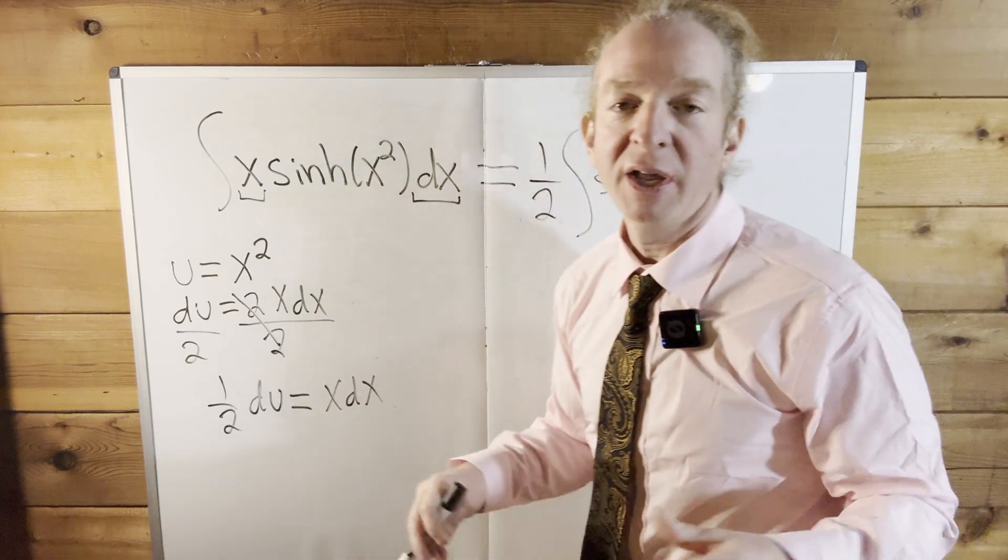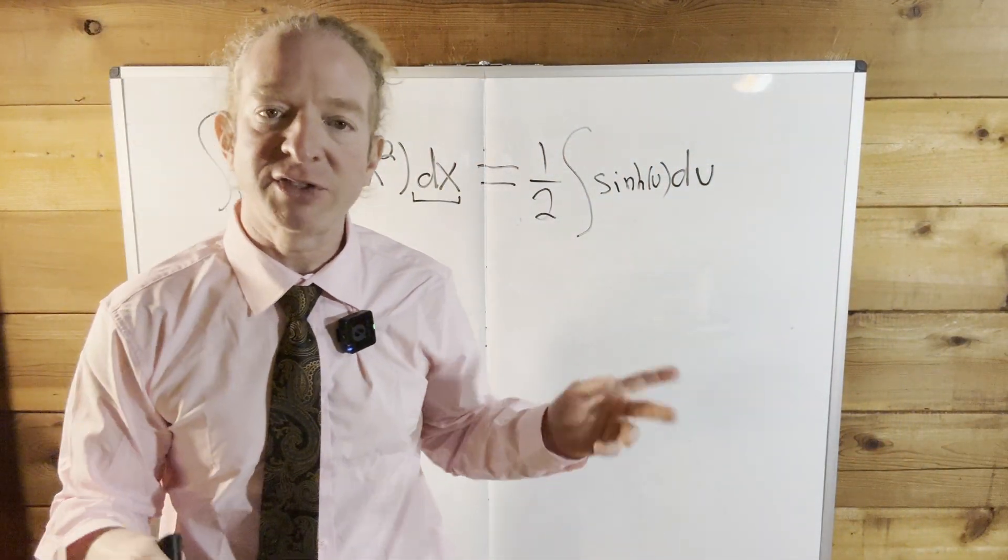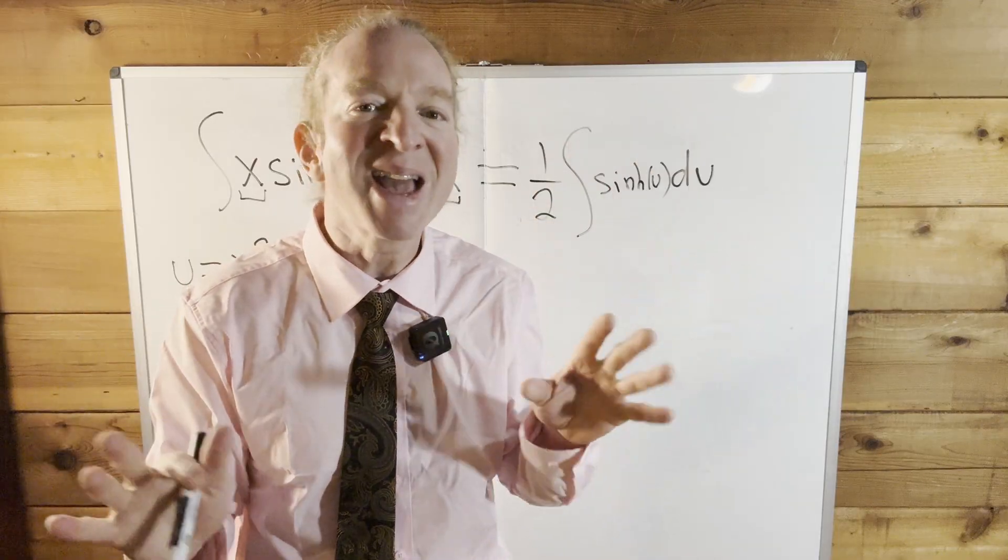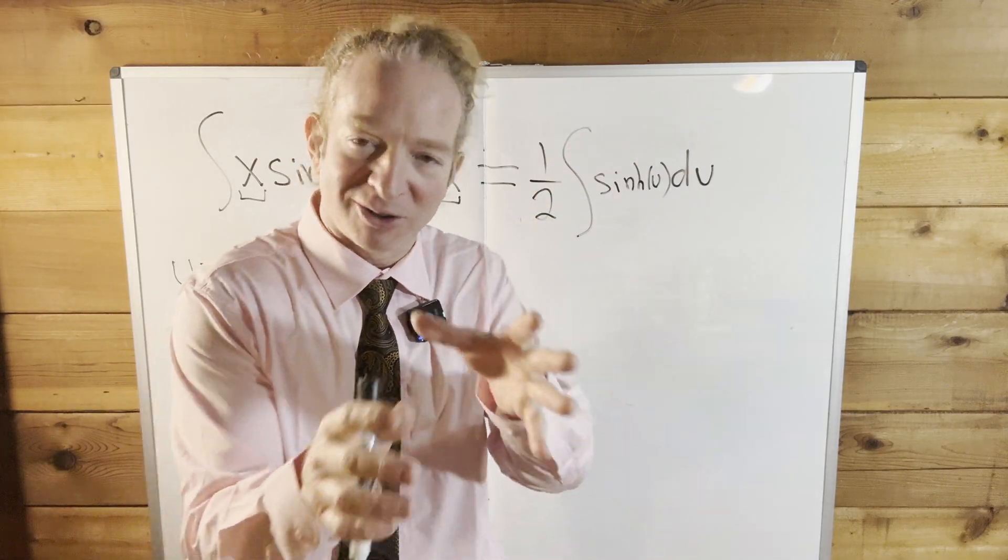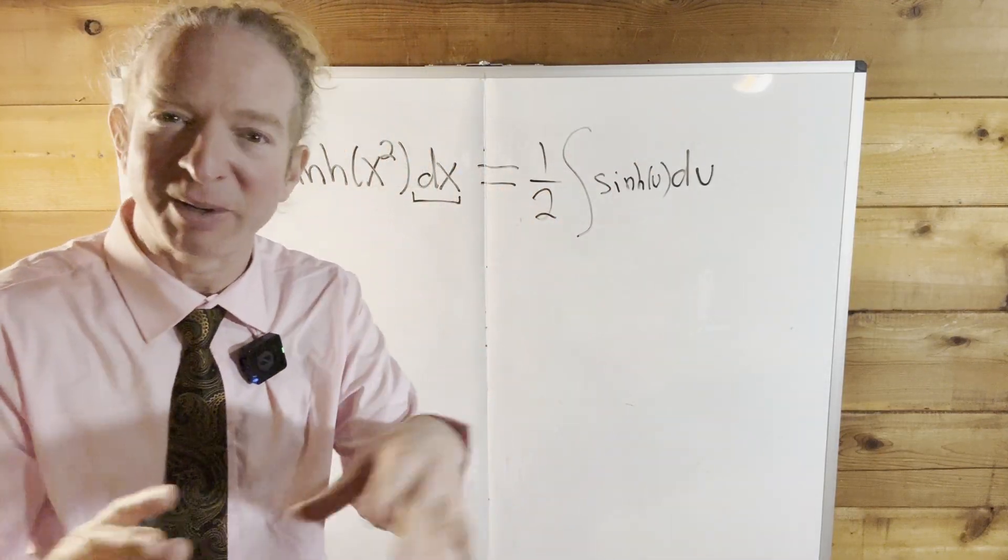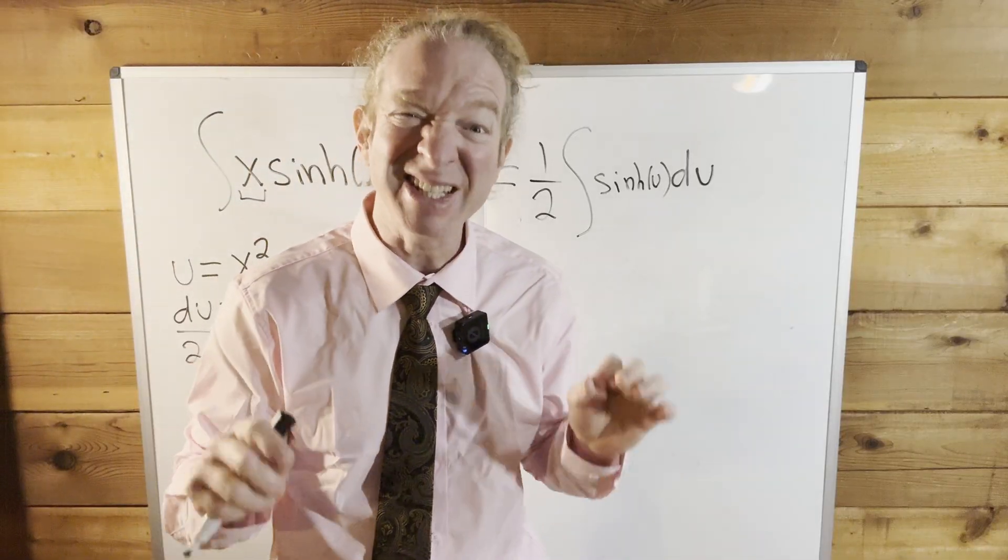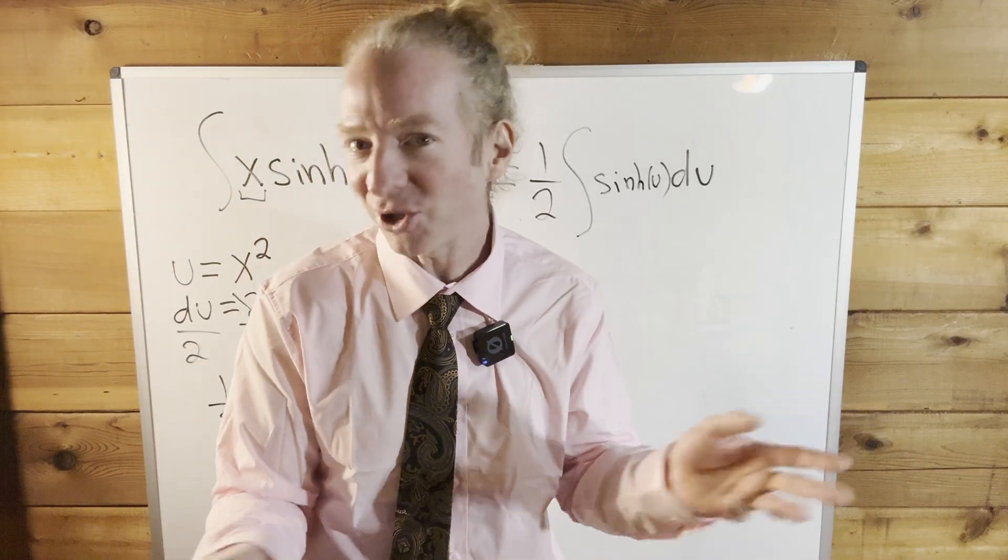Beautiful stuff. And the great thing is the derivative of sinh is cosh. The derivative of cosh is sinh. There's no negative signs involved. The derivative of cosine is negative sine, but it doesn't work that way with hyperbolics. It's easier - you just get sinh and cosh all day long, right?